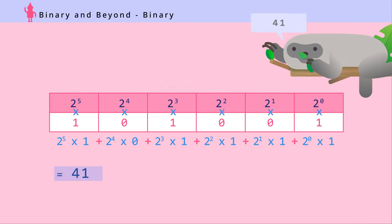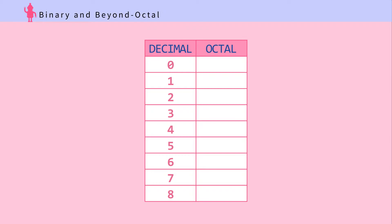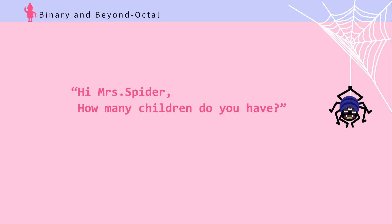Octal! Octal is two to the power of three. It can pack in more binary data into each number. In the octal system, you're given eight numbers from zero to seven. Let's try counting: 0, 1, 2, 3, 4, 5, 6, 7, 10.